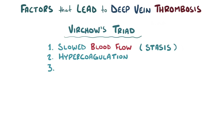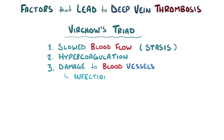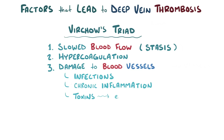A third factor is damage to the endothelial cell lining of a blood vessel, which exposes tissue factor and collagen. Damage can be caused by infections, chronic inflammation, or toxins like those found in tobacco cigarettes.